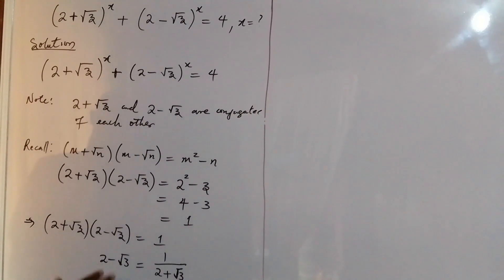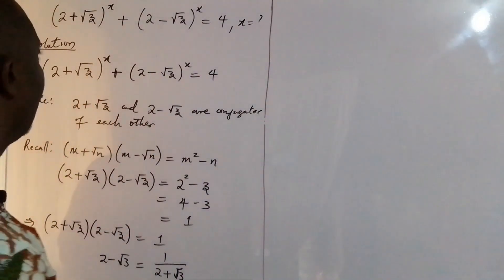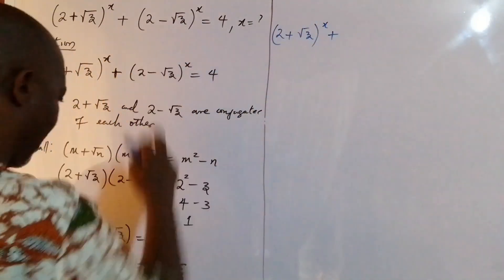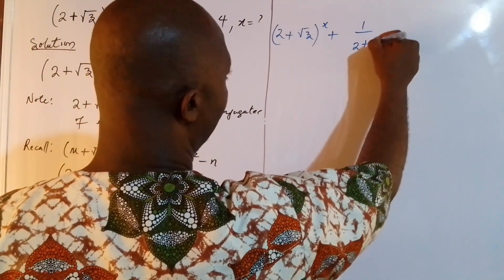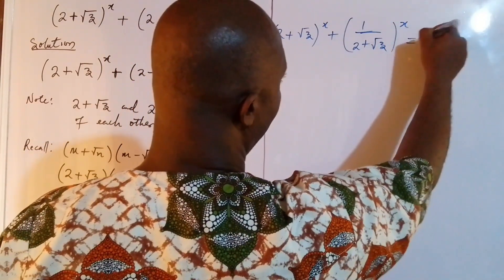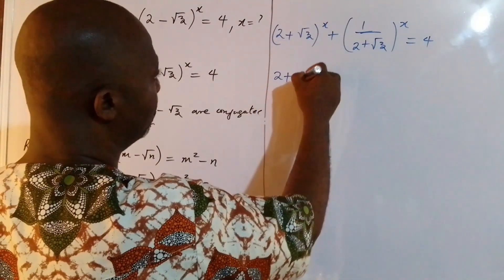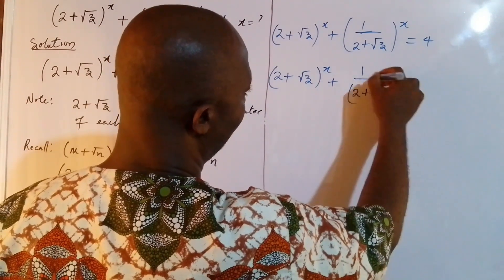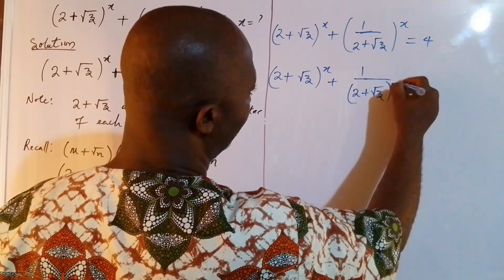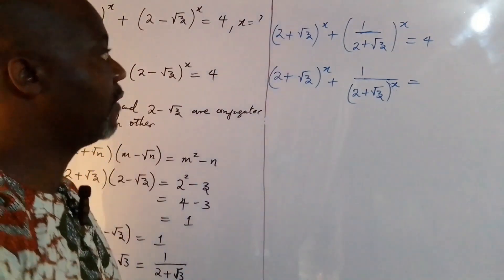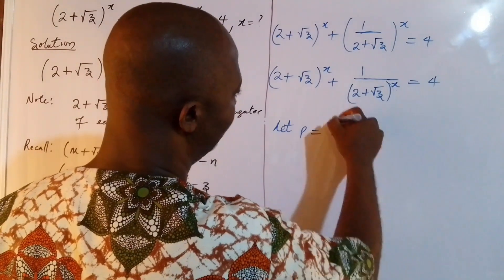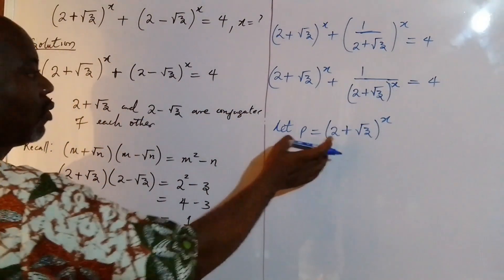So wherever we see (2 − √3) we simply replace it with 1/(2 + √3). The equation becomes: (2 + √3)^x + [1/(2 + √3)]^x = 4. We can further write this as (2 + √3)^x + 1/(2 + √3)^x = 4, since 1 to any power is always 1. Now let's set t equal to (2 + √3)^x as our substitution.